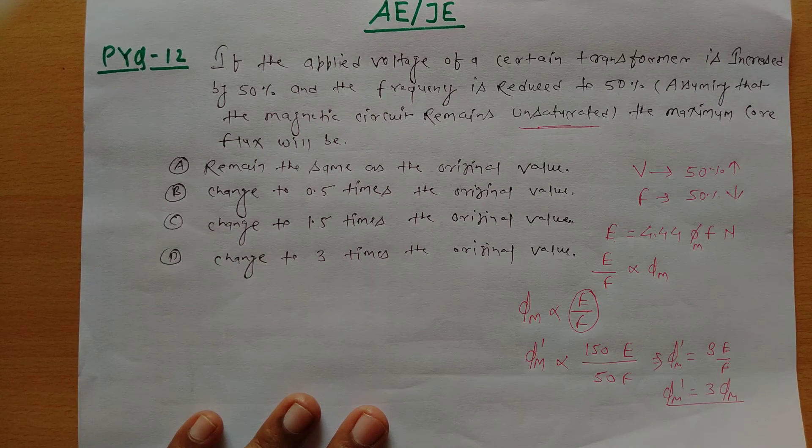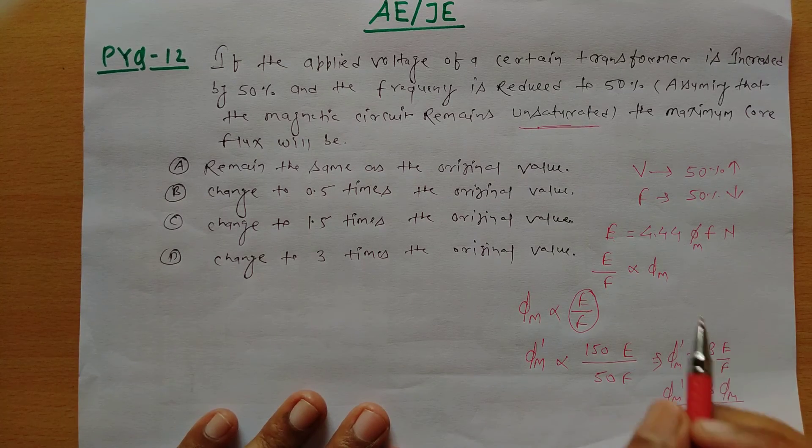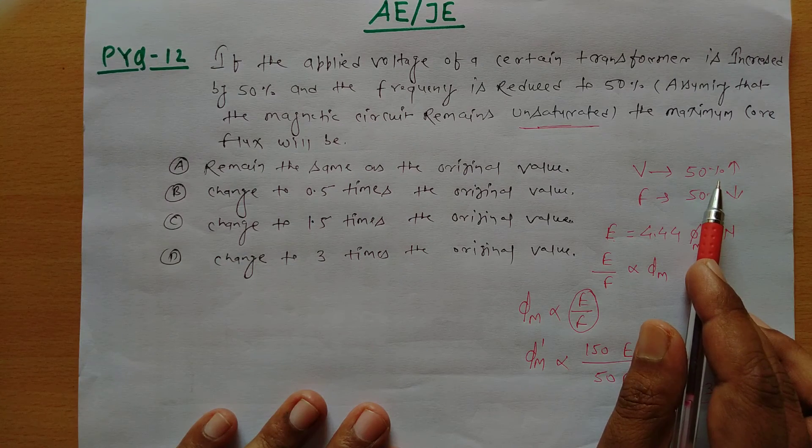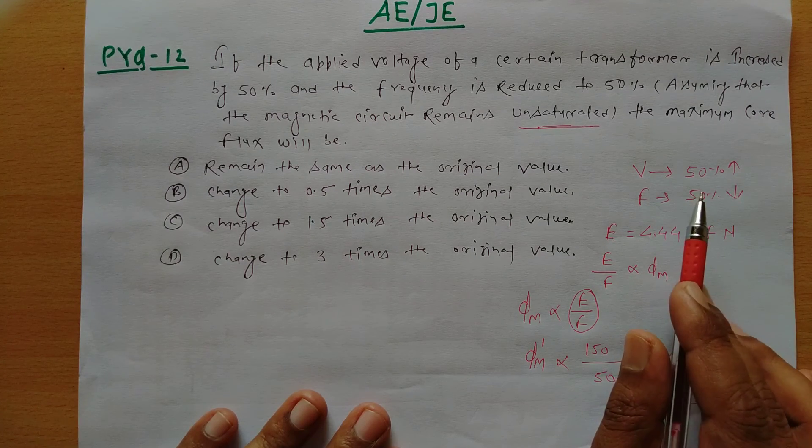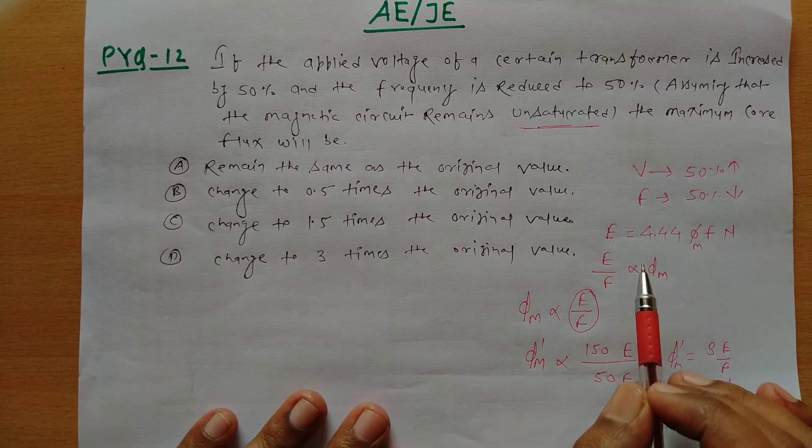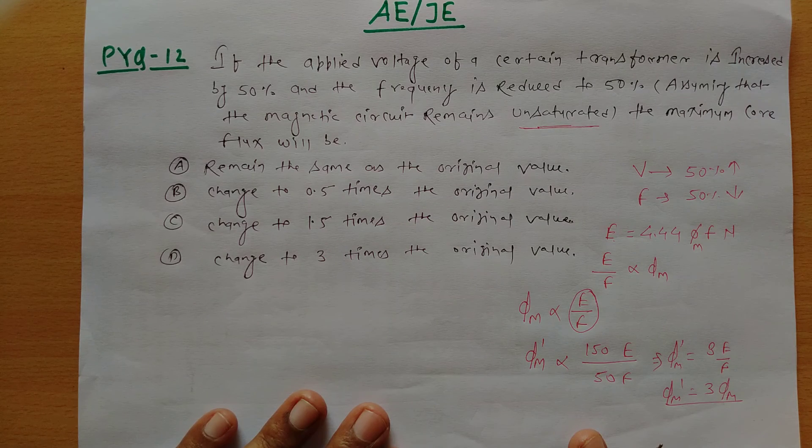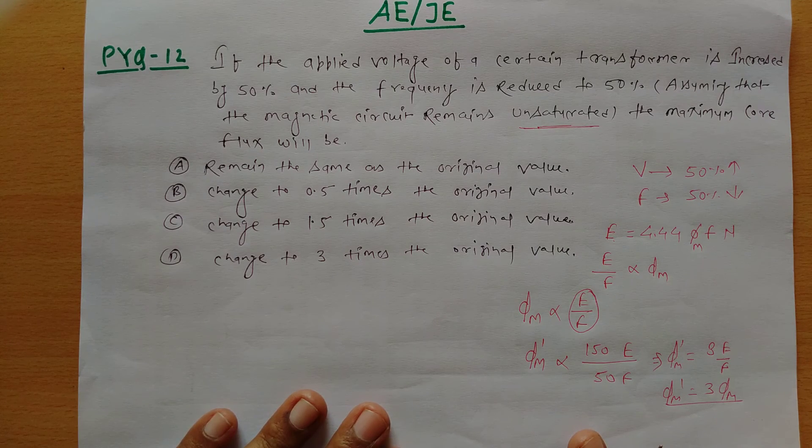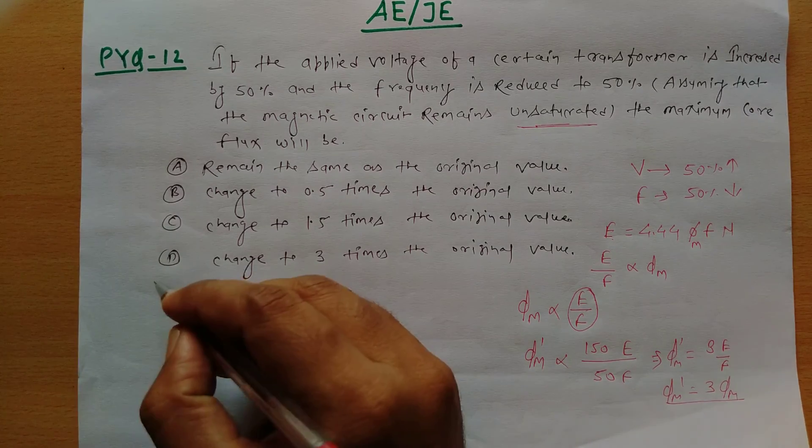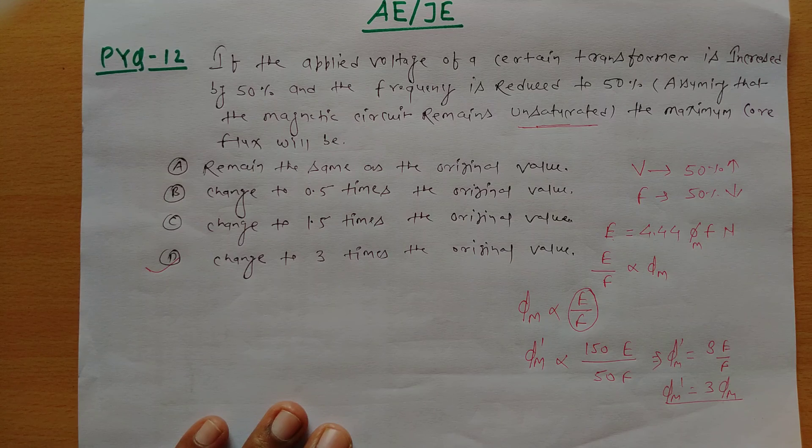So by the variation in the applied voltage to 50% increase and the frequency reduces to 50%, ultimately the maximum amount of the core flux will become 3 times the original one. So option D will be the answer for this particular problem. Thank you.